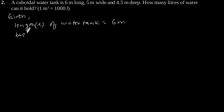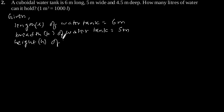So let us solve the question. Length L of cuboidal water tank is equal to 6 meters. Breadth B of water tank is equal to 5 meters, and height H of water tank is equal to 4.5 meters.